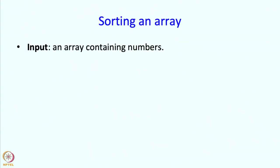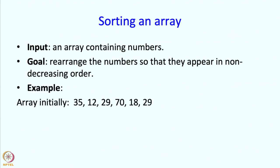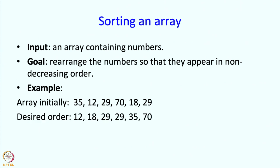The input is an array containing numbers. The output is going to be present in the same array, and the goal is to rearrange the numbers so that they appear in non-decreasing order. For example, suppose the array initially is 35, 12, 29, 70, 18, 29. At the end we want the desired order: 12, 18, 29, 29, 35, 70.